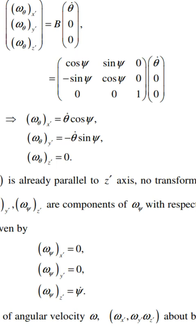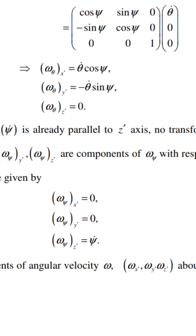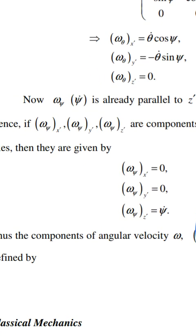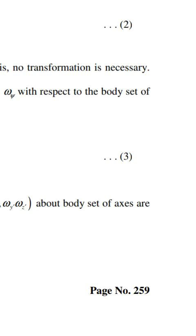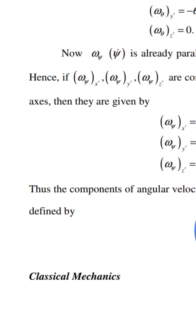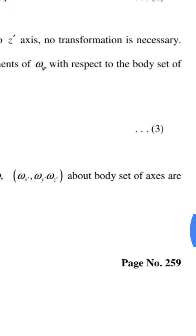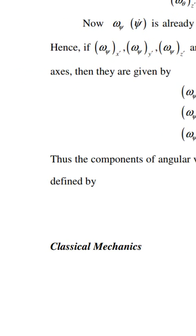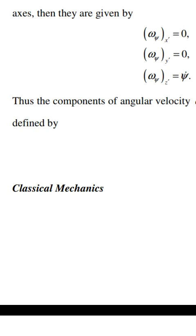This gives omega_theta_x' = theta_dot cos(psi), omega_theta_y' = minus theta_dot sin(psi), and omega_theta_z' = 0. Since omega_psi (psi_dot) is already parallel to the Z' axis, no transformation is necessary. Hence: omega_psi_x' = 0, omega_psi_y' = 0, omega_psi_z' = psi_dot.